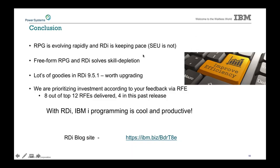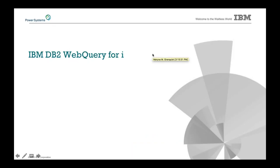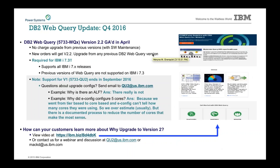Next, I'm going to spend just a minute on DB2 Web Query. DB2 Web Query had a brand new version come out in April — version 2.2, product number 5733-WQX. The old version QU2 will no longer run on 7.2 and went out of support in September of 2016 — so that's already out of support.